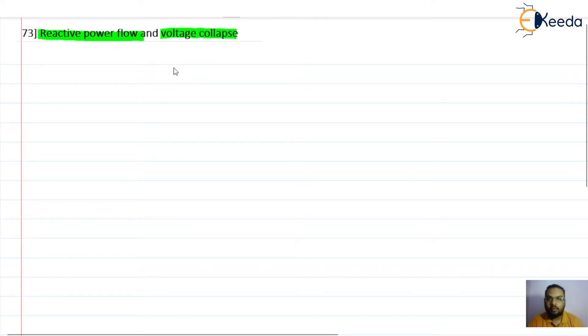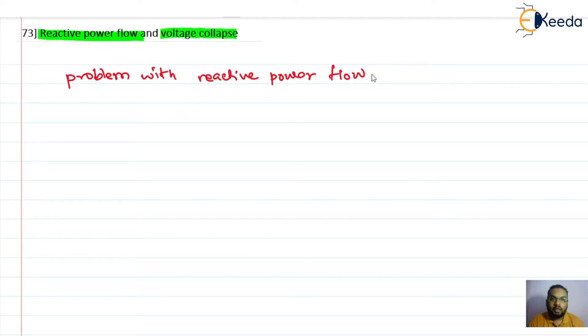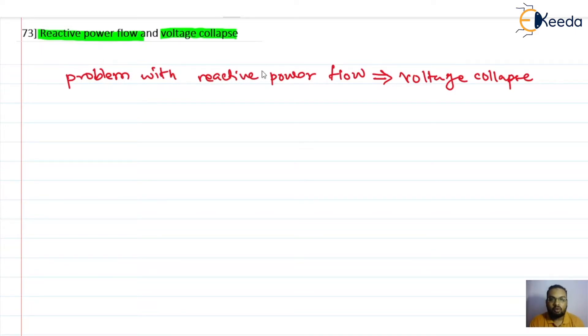In practical power systems there are certain situations where the system experiences problems with reactive power flow. This problem leads to voltage collapse. Voltage is more sensitive to reactive power, so whenever there is a problem with reactive power flow, there will definitely be a problem with voltage stability for that system.